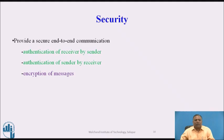Security: the message passing system should provide secure end-to-end communication. This includes authentication of the receiver by the sender — meaning the sender checks for the proper receiver — and authentication of the sender by the receiver — meaning the receiver checks for the proper sender. For protecting messages, encryption is applied, and different encryption and decryption security techniques are used for safe communication.